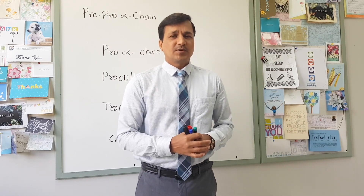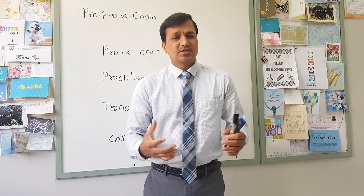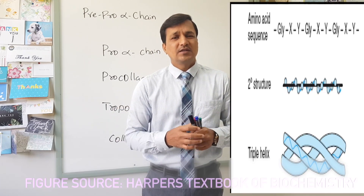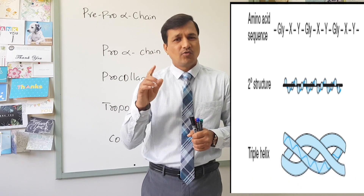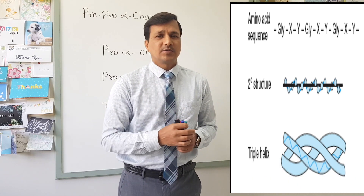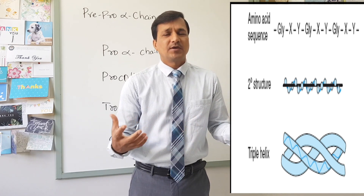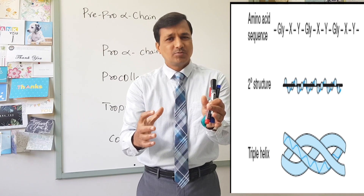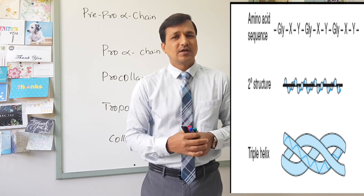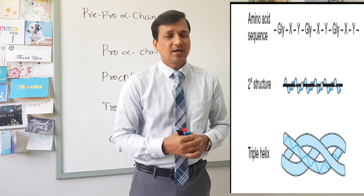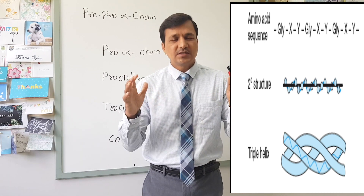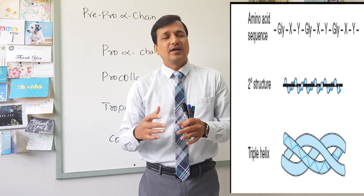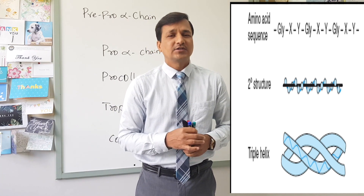The alpha chain in a collagen molecule has a primary structure with a repeated sequence of glycine-X-Y. In this glycine-X-Y sequence, the Y position contains proline or hydroxyproline, and the X position can be any other amino acid. So every third position in a collagen molecule you will find glycine, and you will also find proline or hydroxyproline — where hydroxyproline is eventually converted from proline.